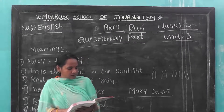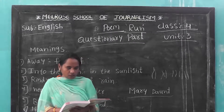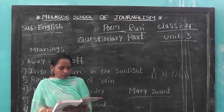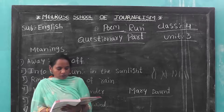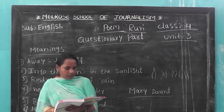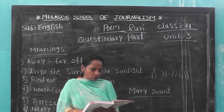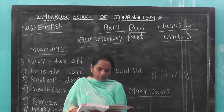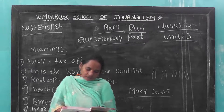Write about the places where the poet wants us to run. The poet wants us to run out to the country, down the hillside, up the lanes, through the meadows, and under the trees.